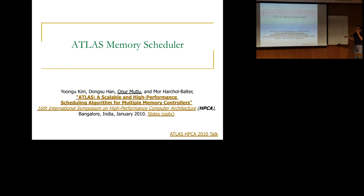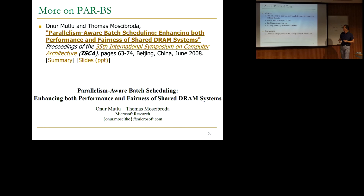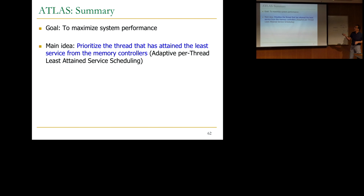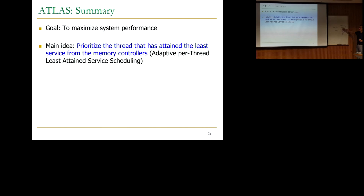I'll quickly talk about the ATLAS memory scheduler. Once we realized this downside, we wanted to look at other scheduling methods. The idea here is to maximize system performance by prioritizing the thread that has attained the least service from the memory controllers — we call this Adaptive Per-Thread Least-Attained-Service scheduling. This naturally prioritizes mouse applications: if they get delayed, they attain very little service and thus become prioritized. Whereas elephants, when serviced, get a lot of service — their attained service count increases — so they naturally get deprioritized over time.